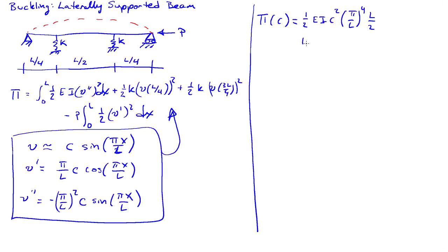From the first spring, we'll have plus 1 half k c squared times 1 half. Evaluating sine squared at the quarter point gives 1 half. Then plus 1 half k c squared 1 half from evaluating sine at the 3 quarter point.